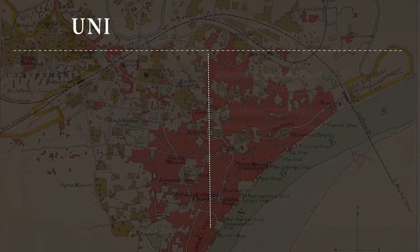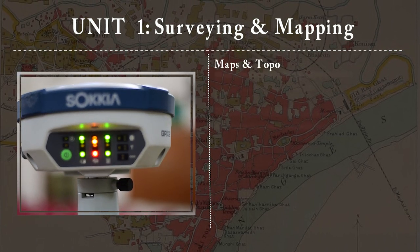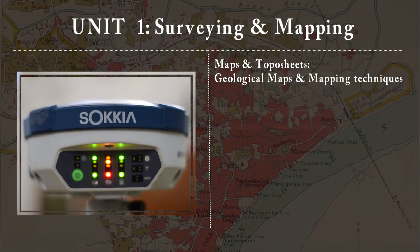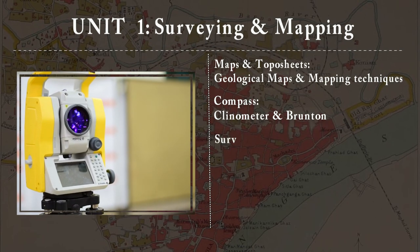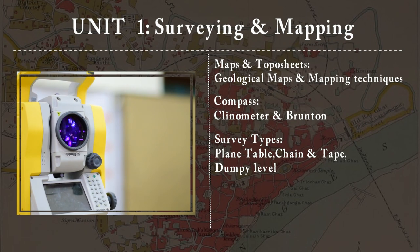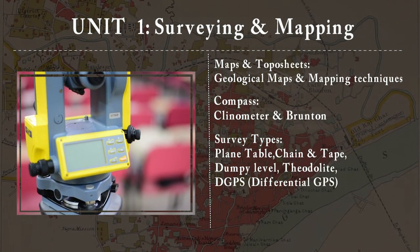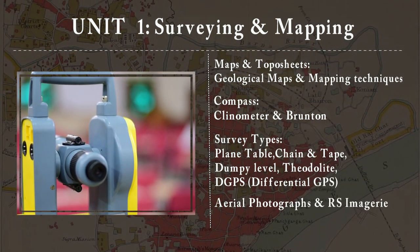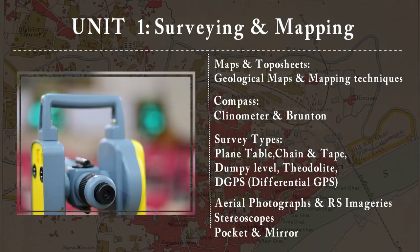The first unit will cover surveying and mapping, including maps and troposites, geographical maps and mapping techniques. We will deal with various types of compass, clinometer and branch tool. We will also cover various survey types like plane table, chain and tape, dumpy level, theodolite, and DGPS. We will also deal with aerial photographs and remote sensing imageries with the help of stereoscopes, pocketed bearer type.